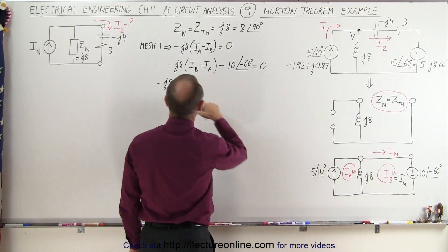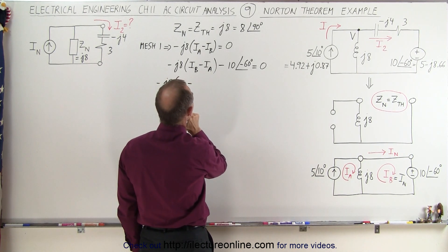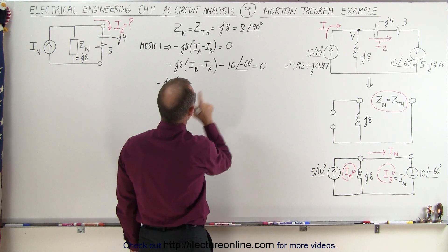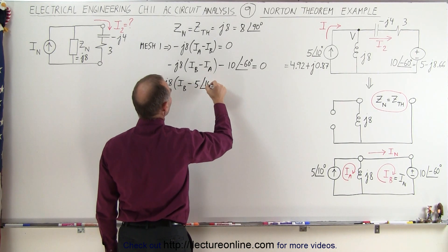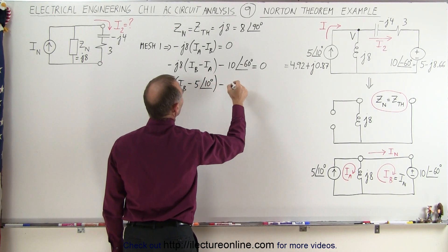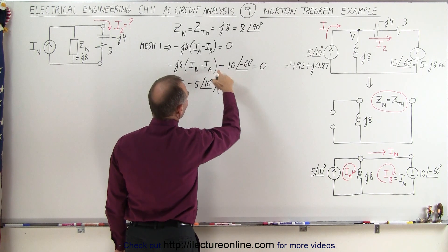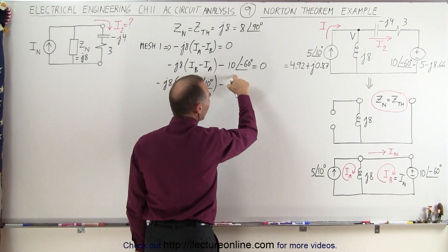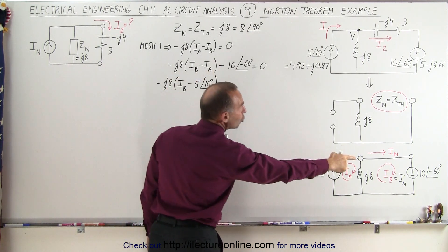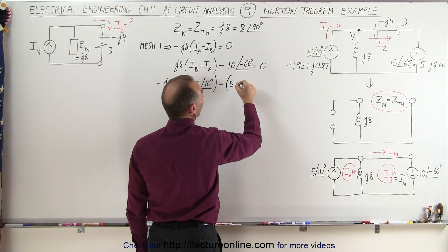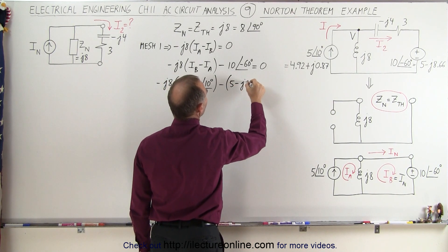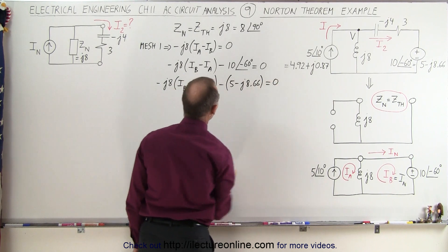Writing this out with the source current as minus 5 with a phase angle of 10 degrees, and subtracting — converting that to minus 5 minus J8.66 — equals zero.